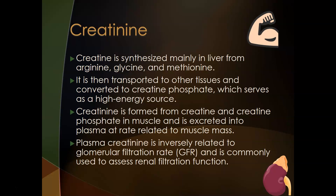Creatinine is formed from creatine and creatine phosphate in muscle as a waste product. As creatine and creatine phosphate are used up and broken down, they are excreted as creatinine. The rate of excretion of creatinine is related to muscle mass — the more muscle mass you have, the higher your baseline creatinine will be.